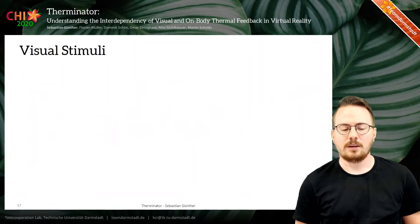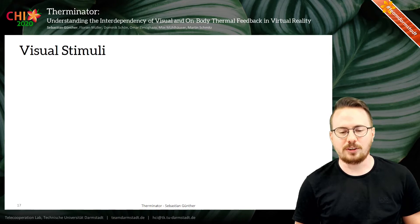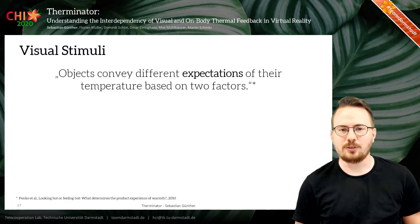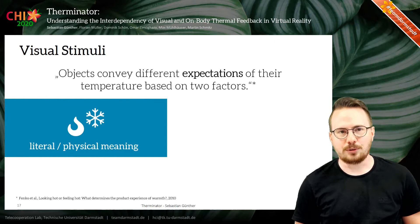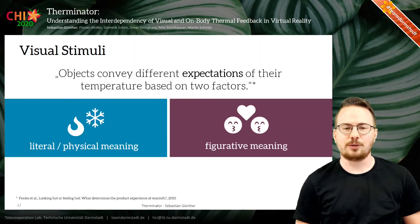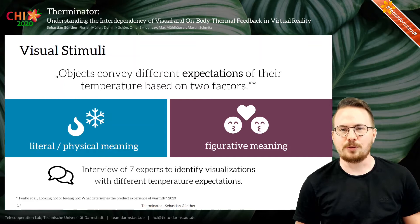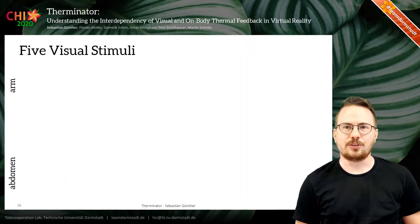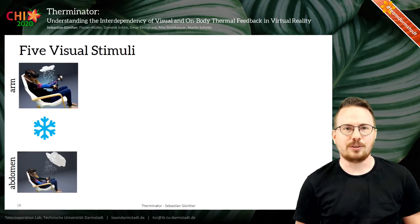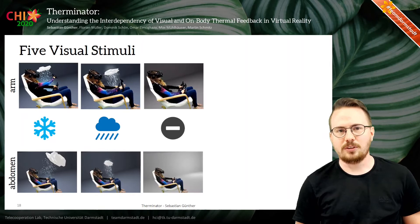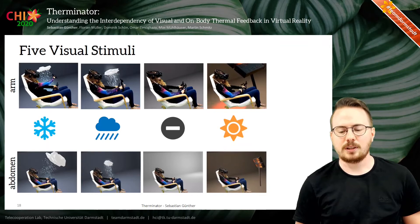For the visual stimuli, we had to identify meaningful visualizations. As Fanko et al. stated, objects convey different expectations of their temperature based on two factors: first, a literal or physical meaning which conveys the actual temperature, and second, a figurative meaning that describes temperature by learned experiences. To do so, we interviewed seven HCI experts and asked them for visualizations, objects, and other things connected to temperature, which they should rank from very cold to hot. Afterwards, we collected all the answers, clustered all items, and counted the column elements. This resulted in five visual stimuli: a very cold snow visualization, a cold rain cloud, no visualization as our neutral visual stimulus, a warm heating lamp, and a hot fire close to the user's body.